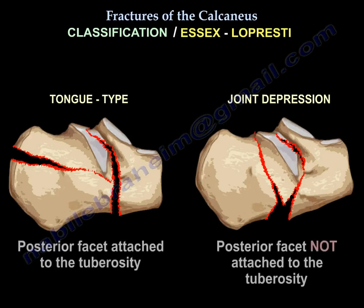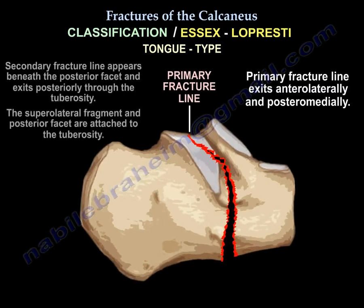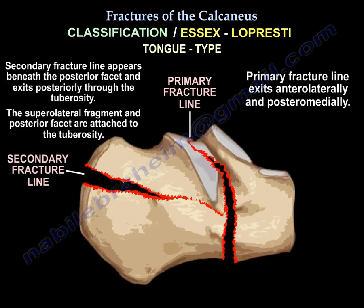In the tongue type, the posterior facet is attached to the tuberosity. The primary fracture line exits anterolaterally and posteromedially. The secondary fracture line appears beneath the posterior facet and exits posteriorly through the tuberosity, so the superolateral fragment and the posterior facet remain attached to the tuberosity.